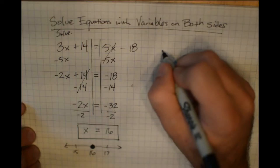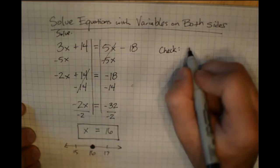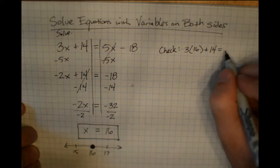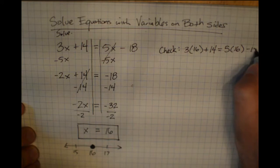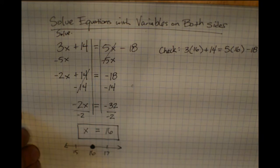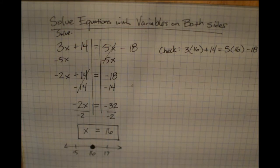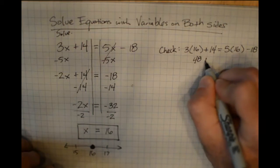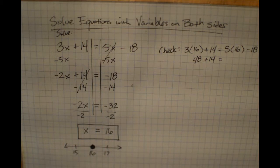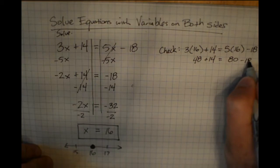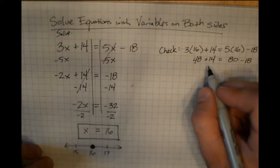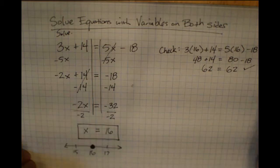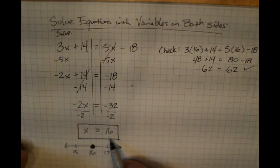It's always a good idea to check, so let's substitute 16 in for x on both sides. On the left side: 3 times 16 plus 14 gives 48 plus 14, which is 62. On the right side: 5 times 16 minus 18 gives 80 minus 18, which is also 62. That's a true statement, so 16 is a valid solution.